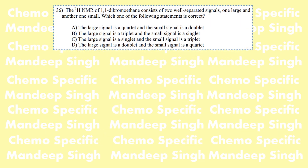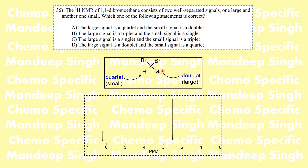The next problem asks about the NMR of 1,1-dibromoethane, which shows two signals — one large and one small. In NMR the area under the peaks represents the number of hydrogens. The methyl group has three hydrogens so it gives the larger signal — a doublet. The single CH hydrogen gives a smaller quartet. The area under the CH peak corresponds to one hydrogen, making it the small signal. The correct option is D.